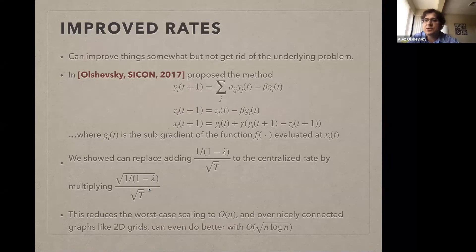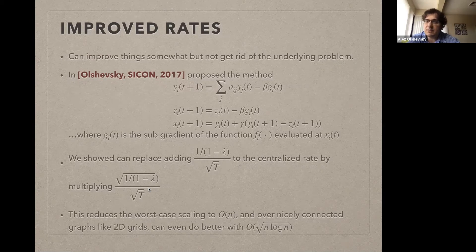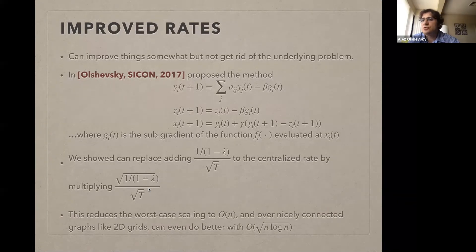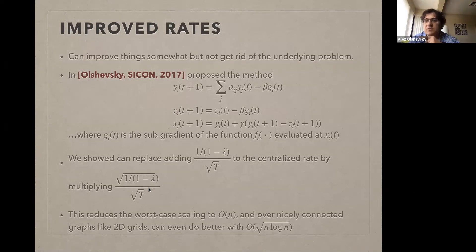But this doesn't get rid of the underlying problem: things get worse with number of nodes rather than better. You can improve the scaling to sqrt(n)/t, but t still needs to grow with n to make things small. You still don't get the benefit of parallelism. This is the problem I want to solve. All of this is fine if you're motivated by sensor networks, but it's not fine if you want to use this for machine learning applications where you need a speedup.